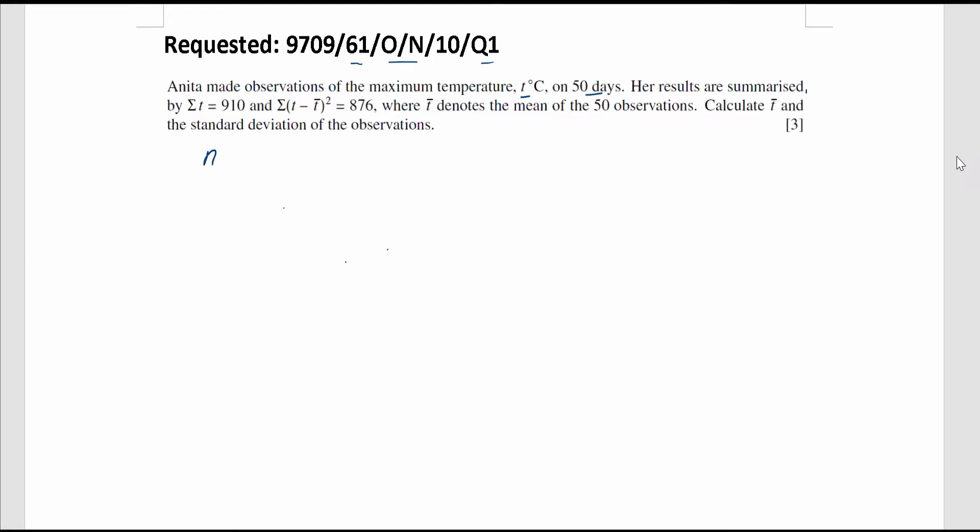So that means the sample size is given as 50. We use small letter n to represent it. Her results are summarized by this and this, where the T bar denotes the mean of the 50 observations. Find out the T bar and the standard deviation of the observations.